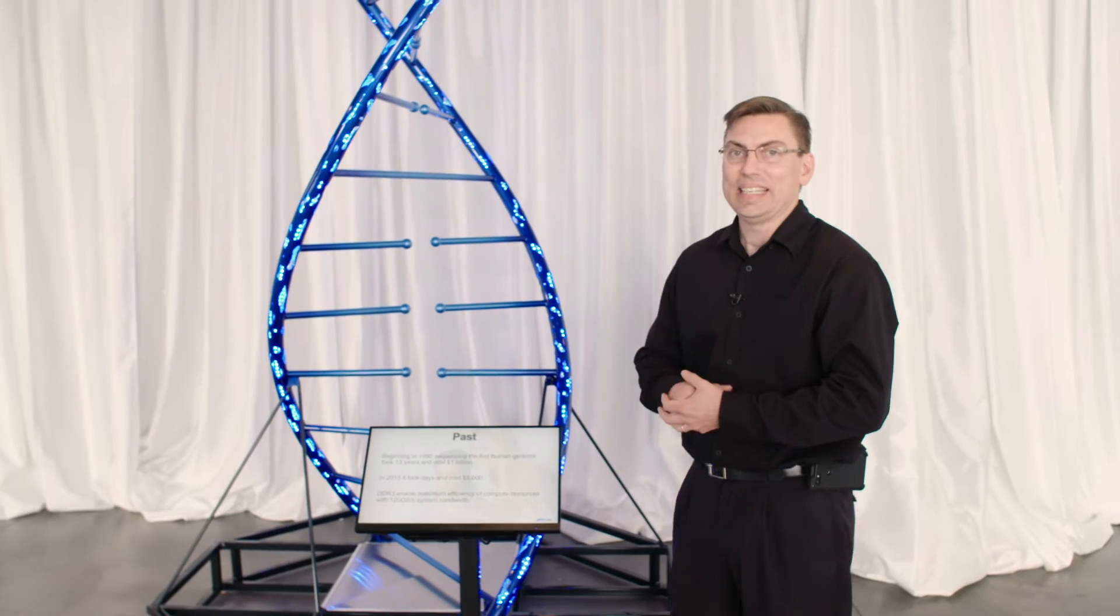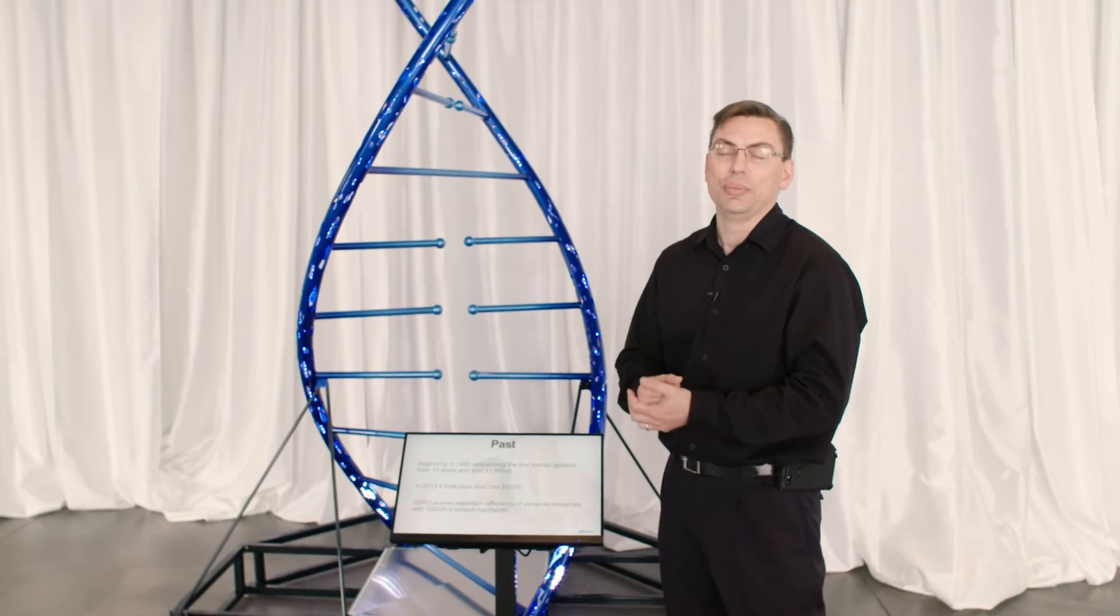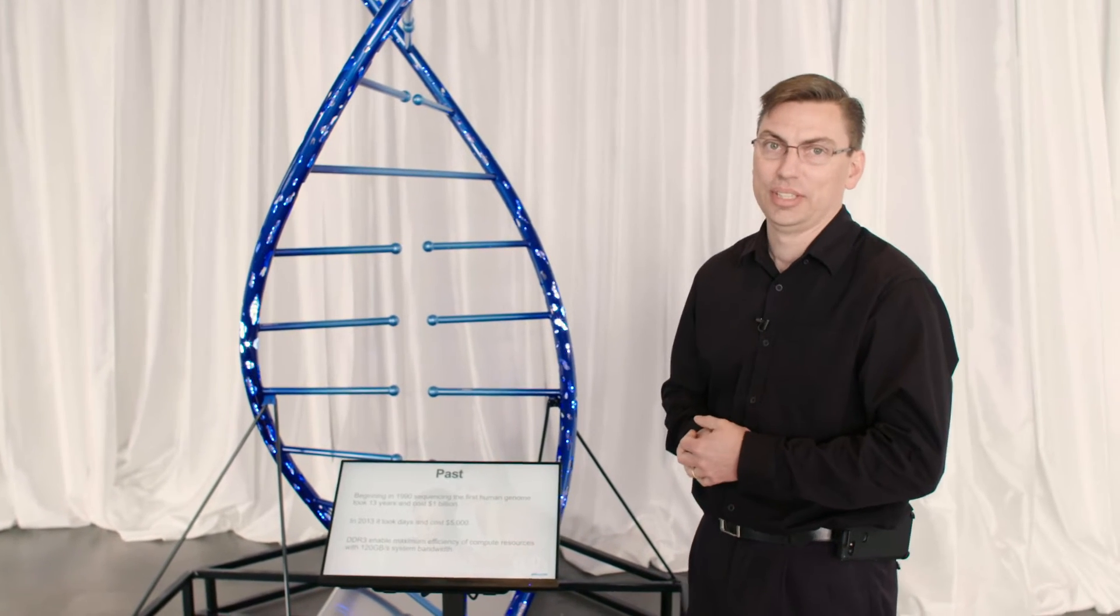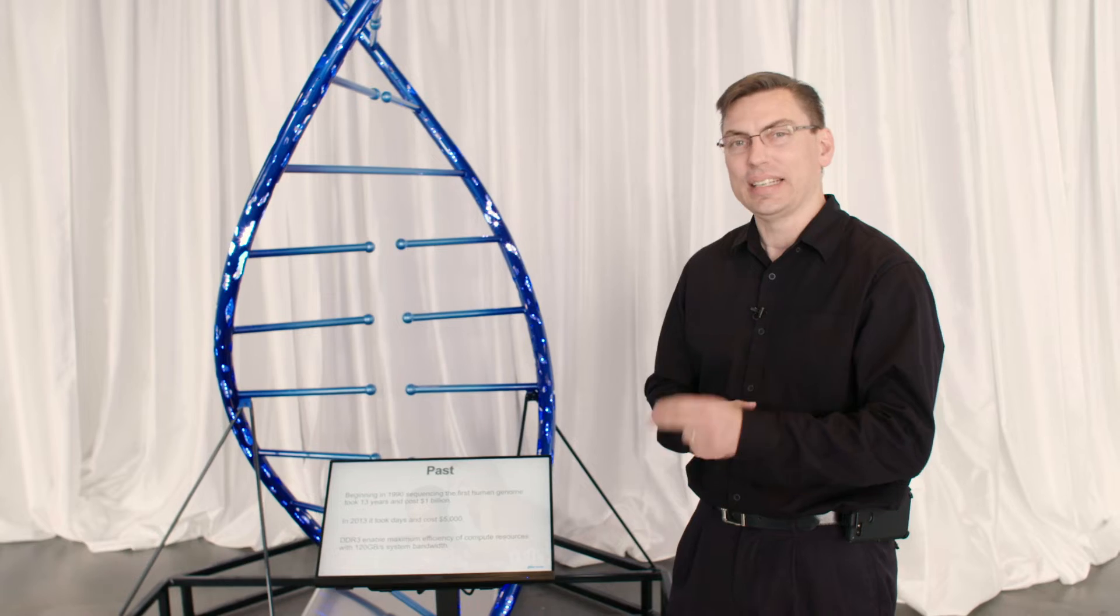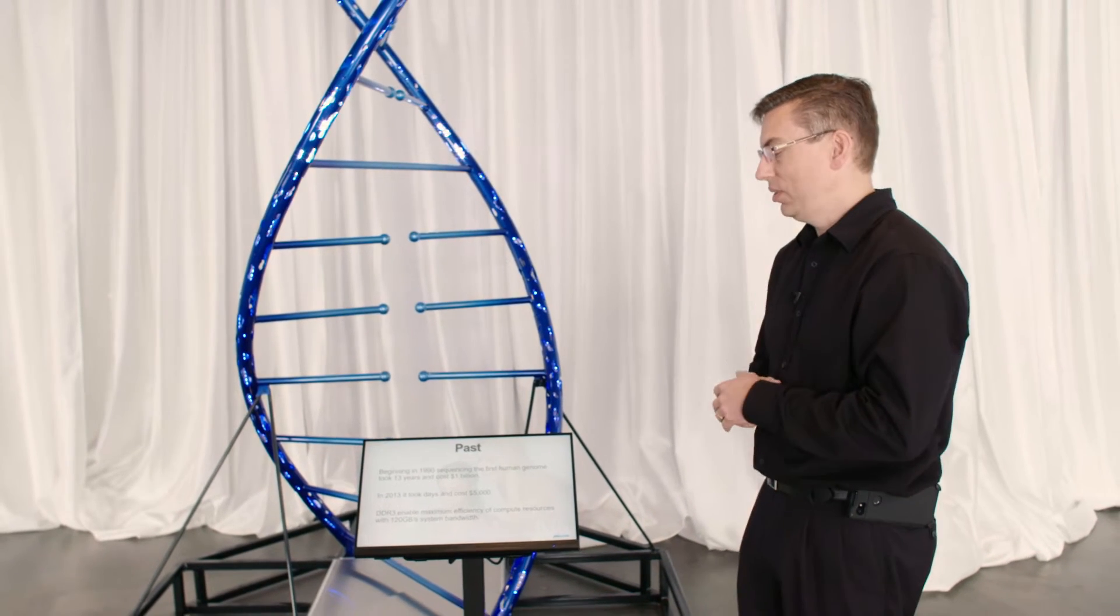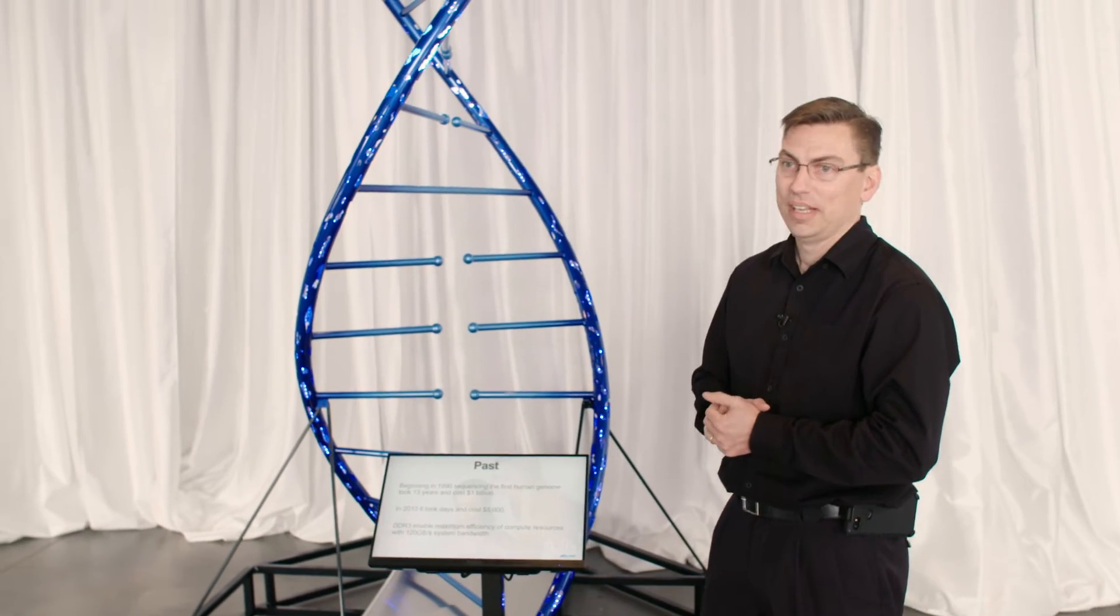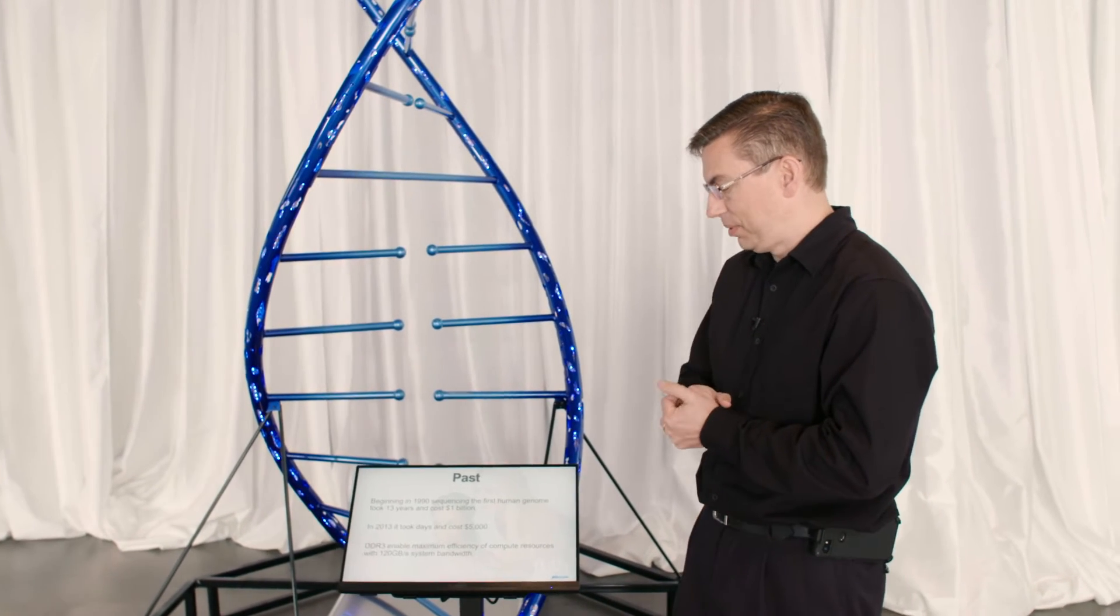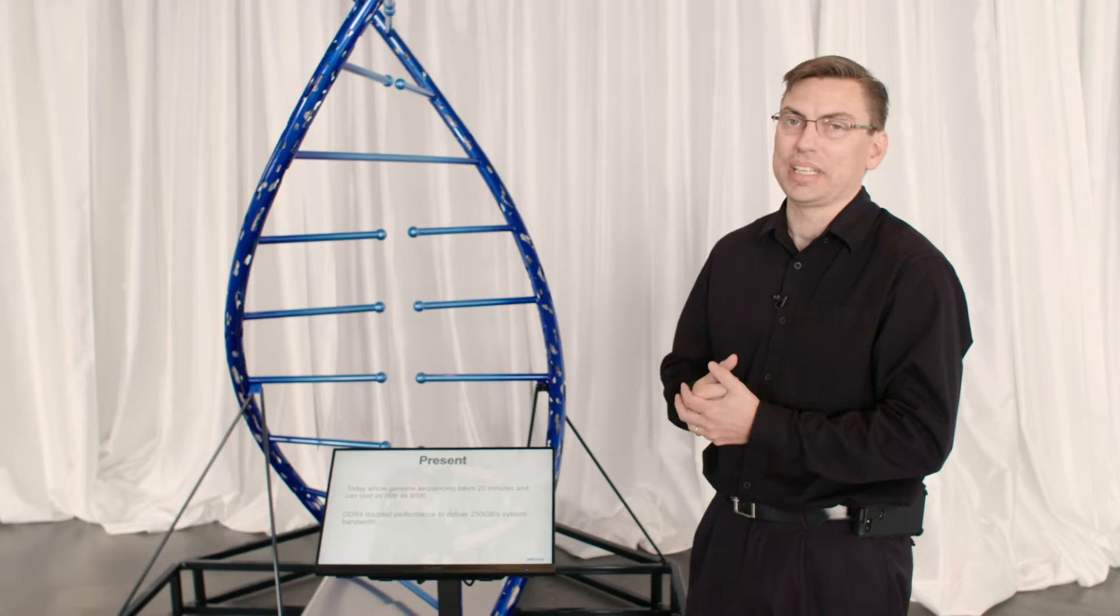So beginning in 1990, the first human genome was sequenced and it took 13 years at the cost of a billion dollars. A decade after that, it got down to just a couple days and it only cost $5,000. At that time, DDR3 was enabling maximum efficiency of compute with around 120 gigabytes per second.